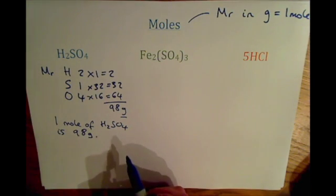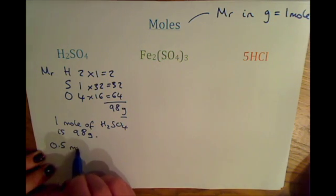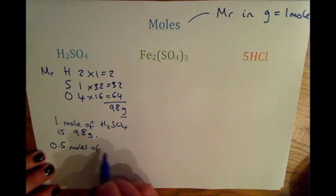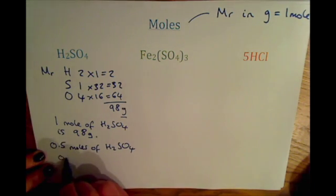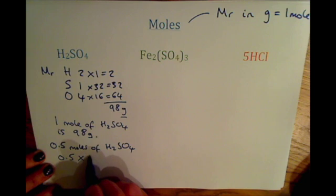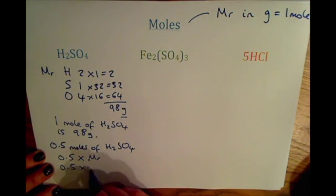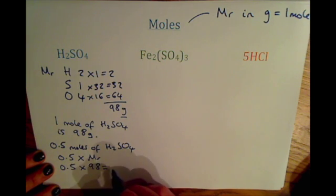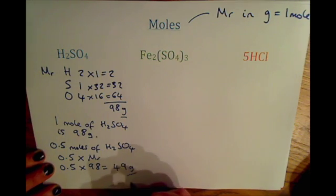So from that, you can work out what two moles would be worth, three moles, four moles, 0.5 moles, etc., just by multiplying it. So 0.5 moles of H2SO4, if you had that question, you would just do 0.5 times by the MR, which is 98. So 0.5 times by 98 will give you 49 grams. We're putting it into grams this time.